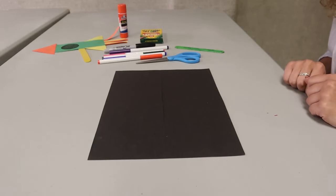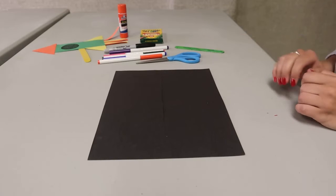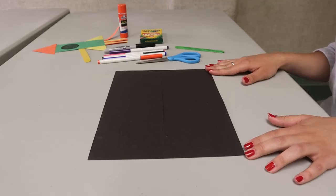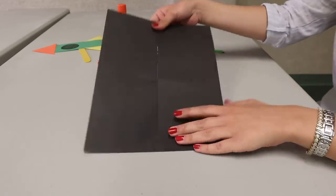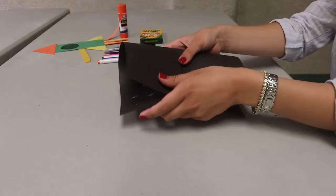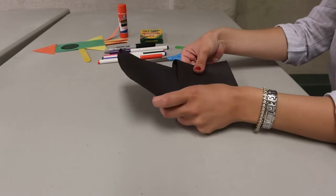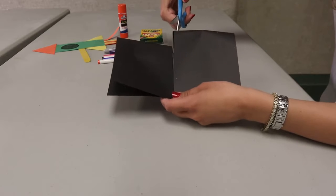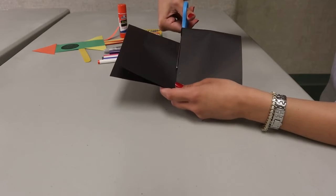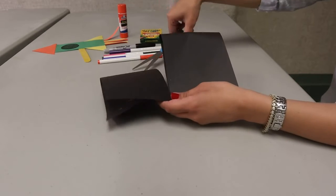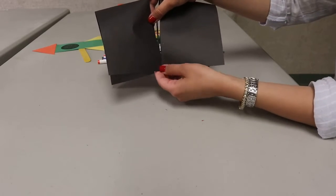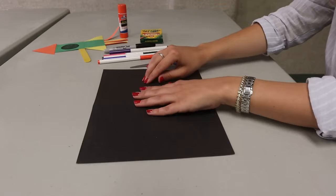The first step is to make our night sky, our background for our spaceship. So you're going to take a black piece of paper and you are going to fold it in half. And then you are going to cut down that black piece of paper. You're going to want to cut it so it's not all the way down, but you're going to leave a little bit of space where you won't cut.